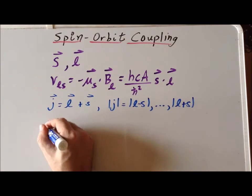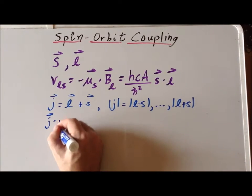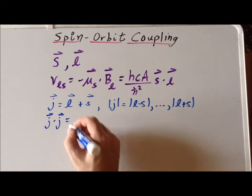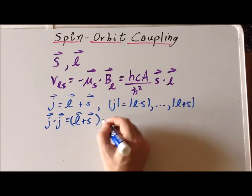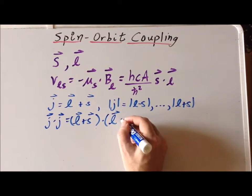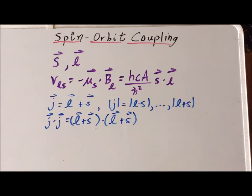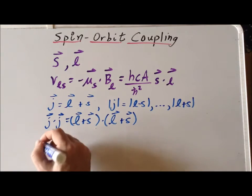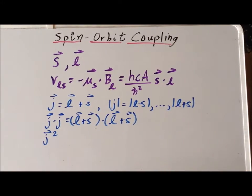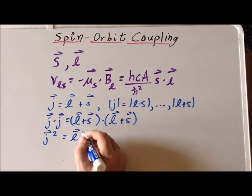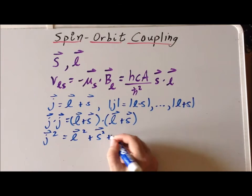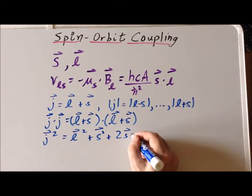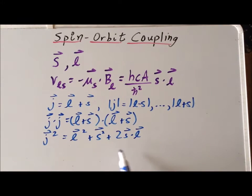Now we will dot the J vector with itself. And since J is just L plus S, we can replace each of the J's by the vector sum of L plus S. We can write this as the J vector squared is equal to the L vector squared plus the S vector squared plus two times the dot product of the S vector with the L vector. The order that we write the dot product for the two vectors does not matter in this particular case.